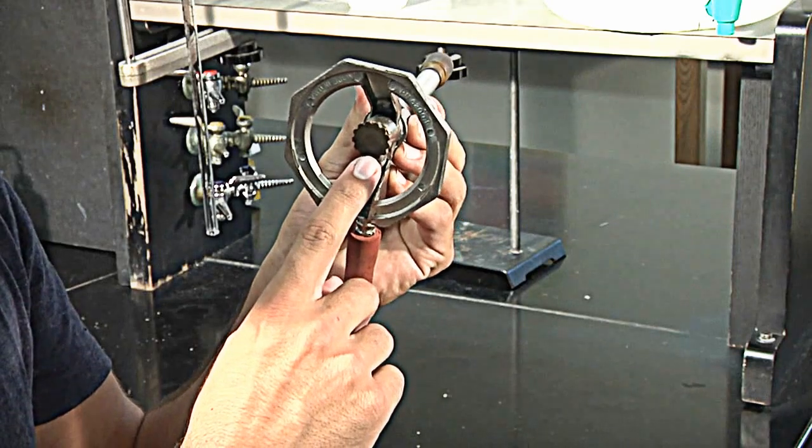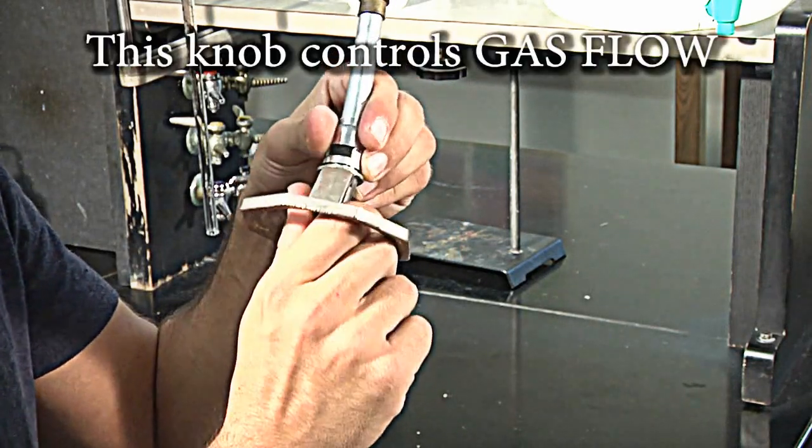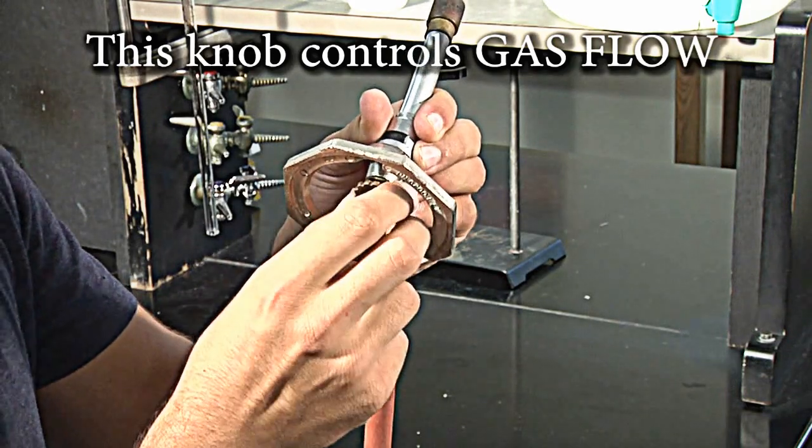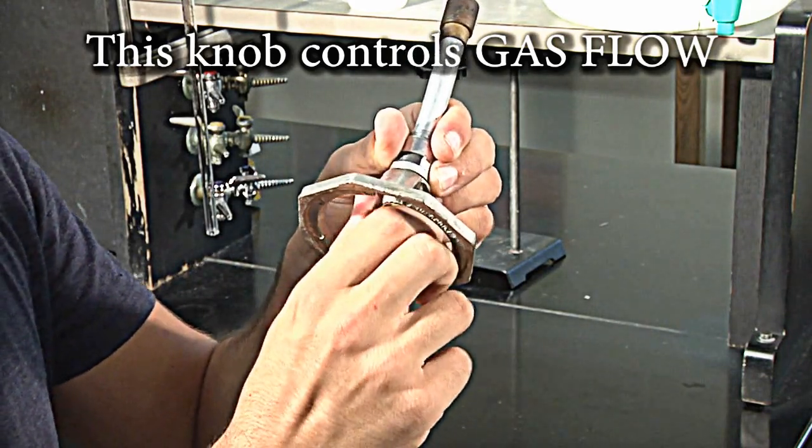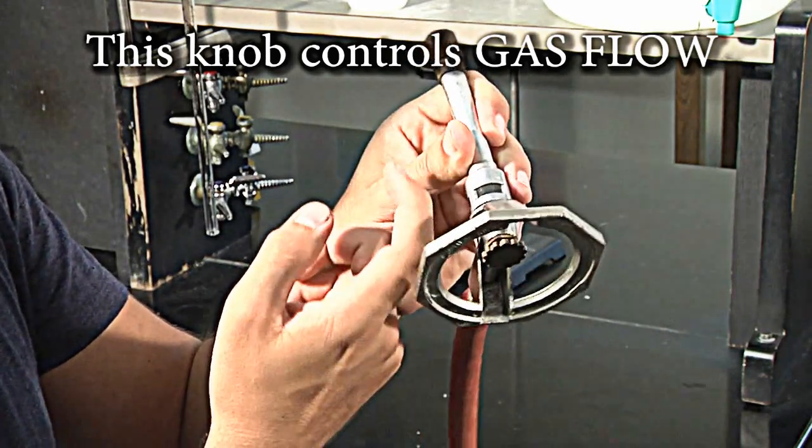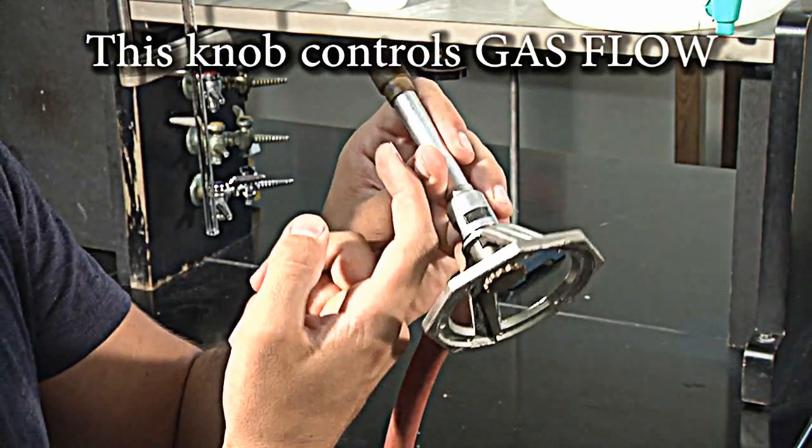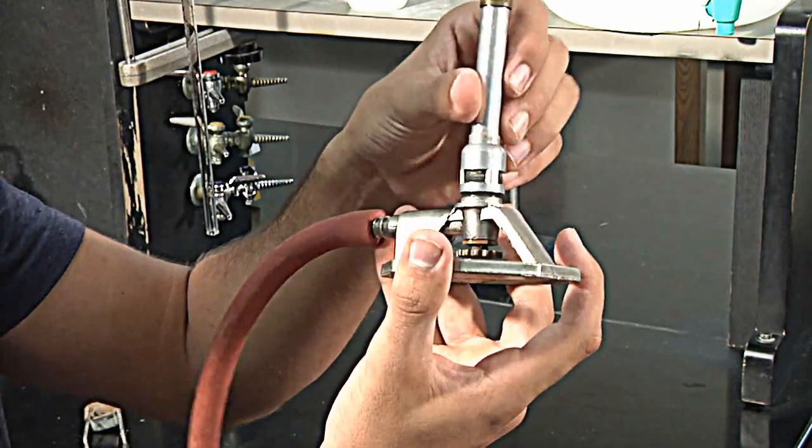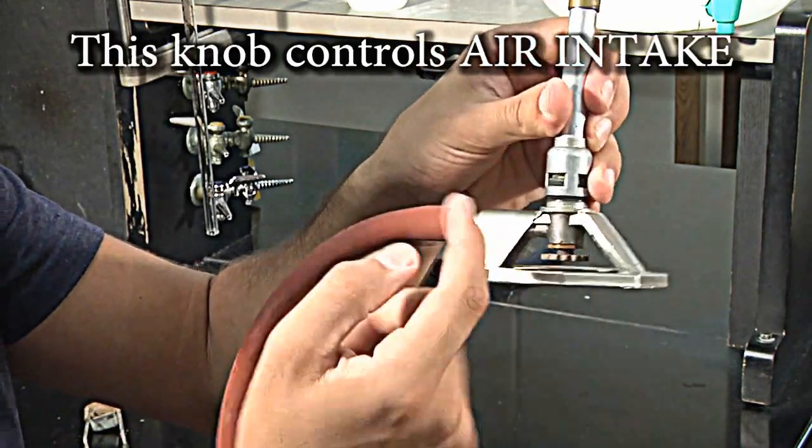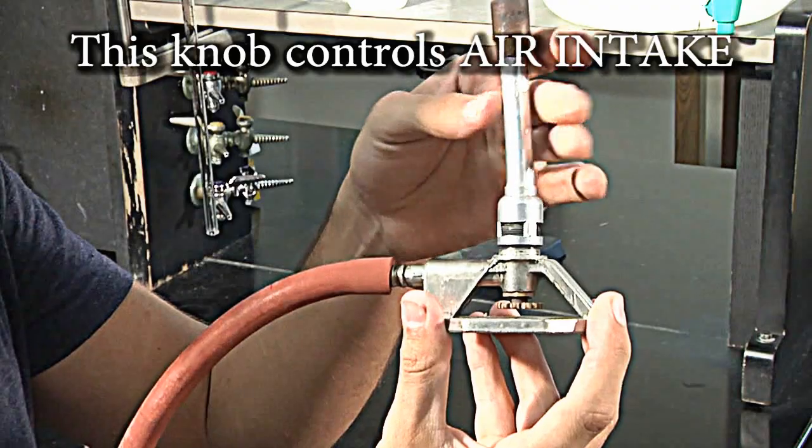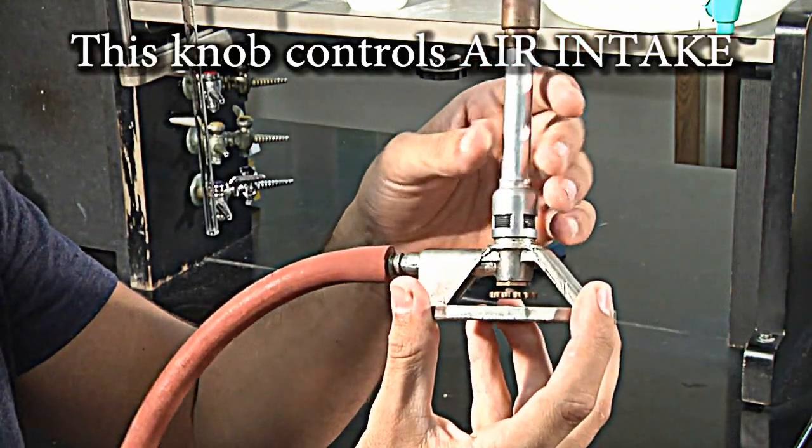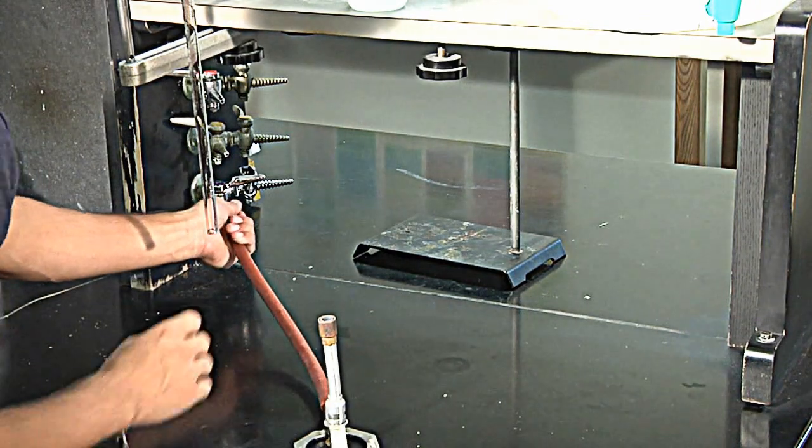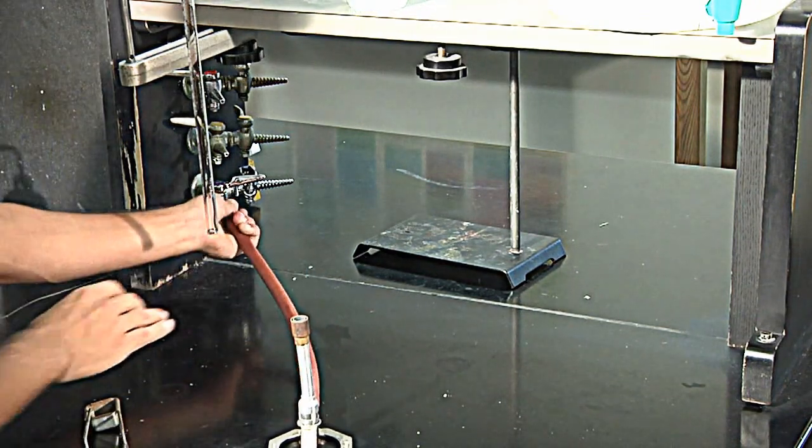The first step is to ensure that the knob is closed tightly. Remember, righty tighty, lefty loosey. So make sure that it is tight and that will prevent gas from flowing at a very quick flow rate through the burner. Next, make sure that it is fully closed here to allow a very small amount of oxygen through or no oxygen. The next step is to plug it in to your gas outlet.